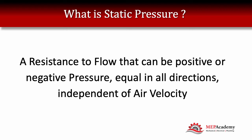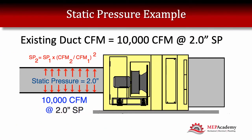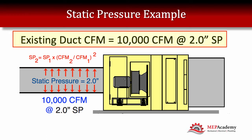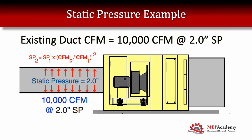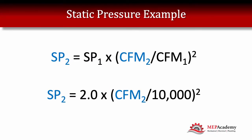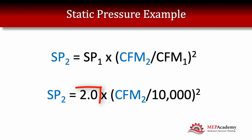This simple formula makes it easy to calculate what the new static pressure will be. For our example, we have a duct that has 10,000 CFM at 2 inches of static pressure — those are our existing conditions. We can plug that into the formula where the 1 represents existing conditions: 10,000 CFM and 2 inches of static pressure.